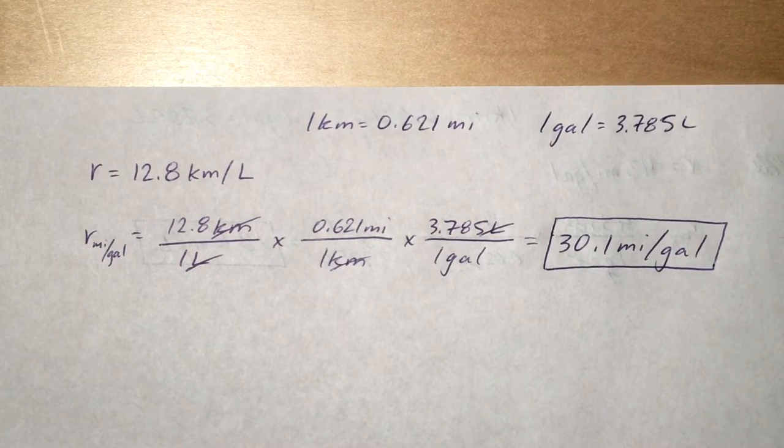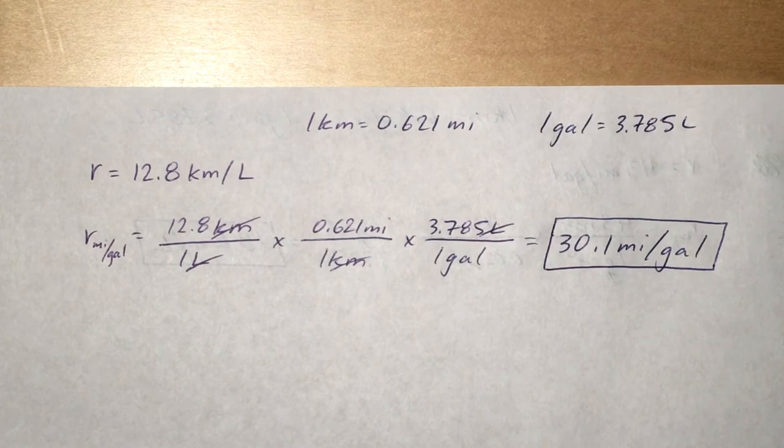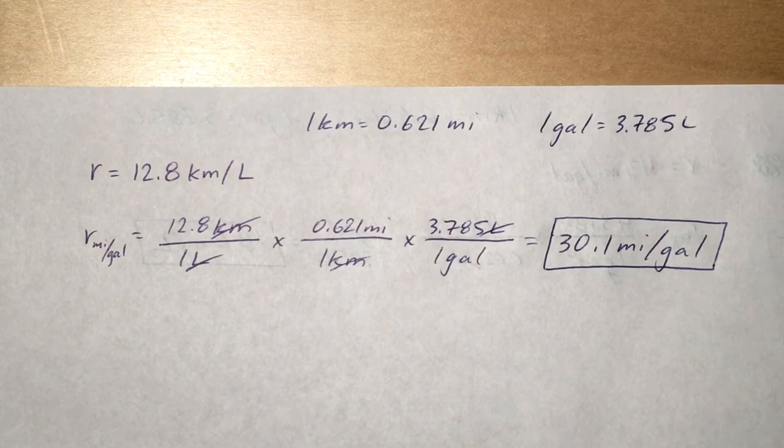Then we just go ahead and multiply across: 12.8 times 0.621 times 3.785. That's going to give us an answer to three sig figs because that's how many was given in the problem at 30.1 miles per gallon.